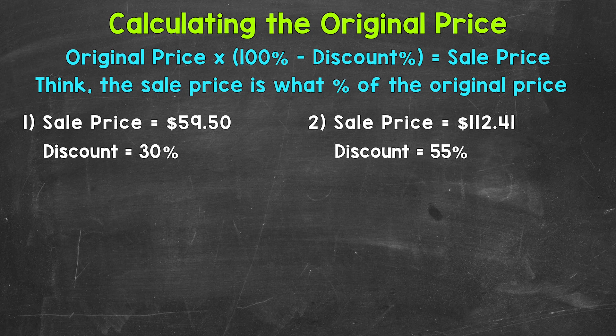So let's set this up for number 1. Now we don't know the original price, so we are going to use a variable P to represent the original price, and then plug in everything else we are given. So we have P, that represents the original price, times 100% minus the discount percent of 30%, well that's going to give us 70% equals 59.50.